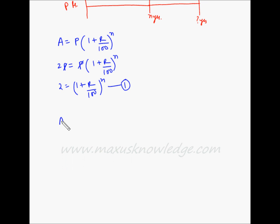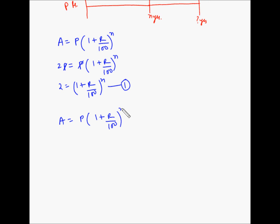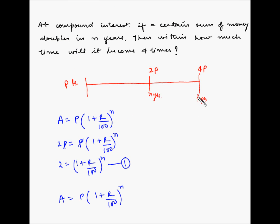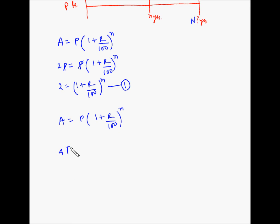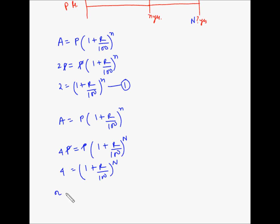The second case: A = P × (1 + r/100)^N, where the amount is 4 times P at the end of capital N years. So 4P = P × (1 + r/100)^N. P cancels with P, giving us: 4 = (1 + r/100)^N. This can be expressed as 2² = (1 + r/100)^N.